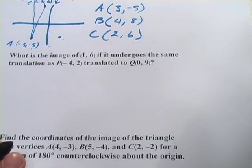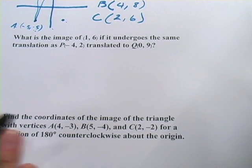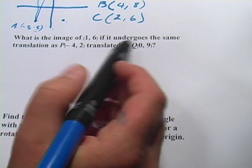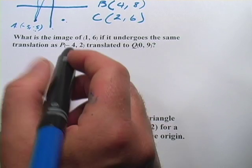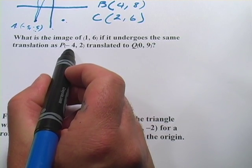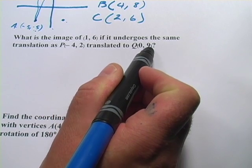Let's try another one. It says, what is the image of (1, 6), just a single point, if it undergoes the same translation as P(-4, 2) translated to Q(0, 9)?